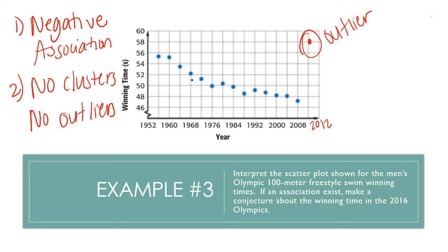Now, let's finish answering this question. It says, if an association exists, make a conjecture about the winning time in the 2016 Olympics. So conjecture, I have to come up with some educated answer about what I think or where I think the 2016 winner will be at. So 2016 is going to be way over here. If it's a negative association, I'm going to say it's going to slowly decrease again. And I might say 2016, the time is going to be about 45 seconds. Based on the trend that I see, I definitely know in 2016, the time is not going to increase, it is definitely going to decrease, it is going to get faster.